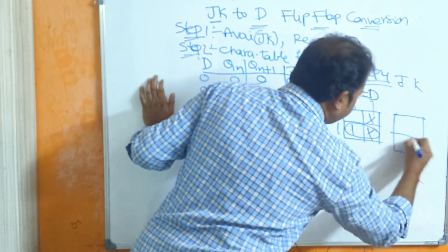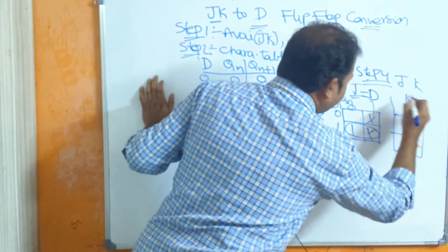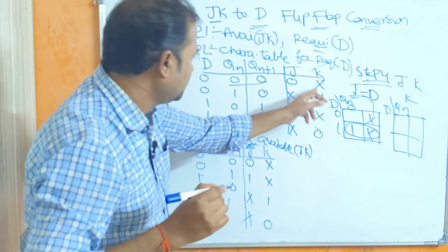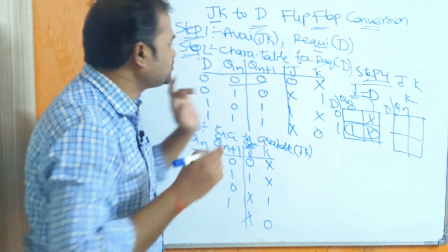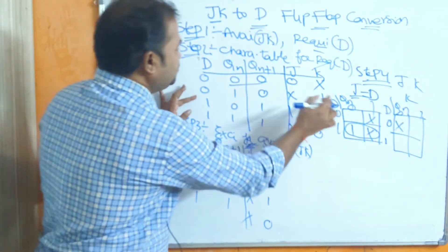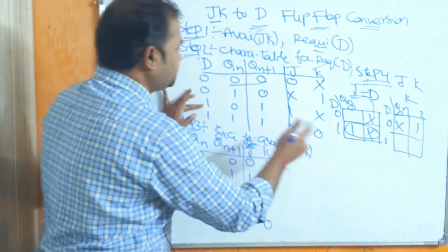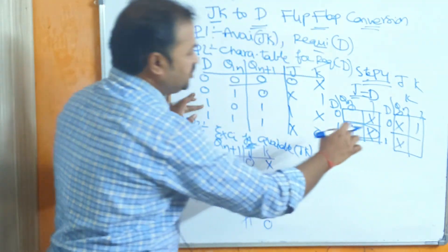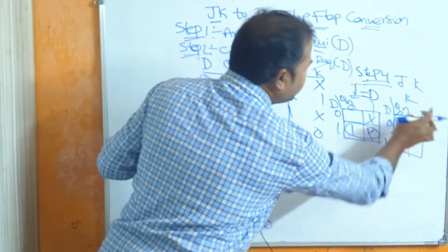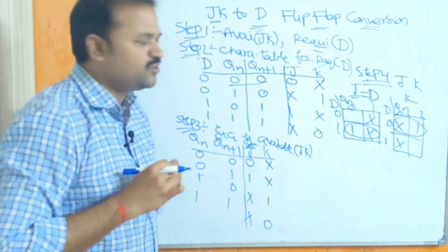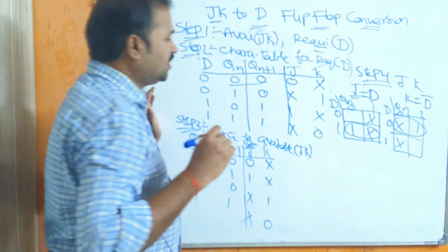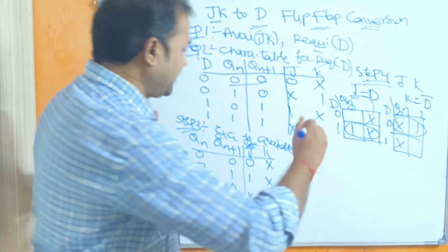Likewise, evaluate the expression for K. D and Qn are the inputs. Observing the K column: D=0, Qn=0 gives don't care; D=0, Qn=0 gives don't care; D=0, Qn=1 gives 1; D=1, Qn=0 gives don't care; D=1, Qn=0 gives don't care. We can combine these two cells as a group. Qn is changing from 0 to 1, so we don't consider it. The D value is 0, so K is D-bar.